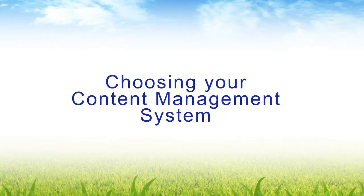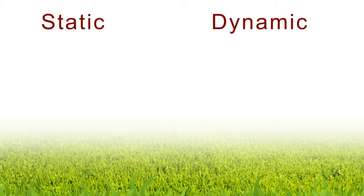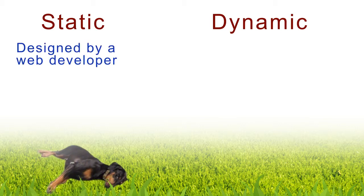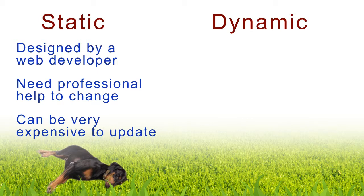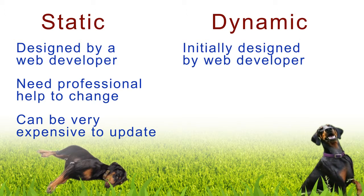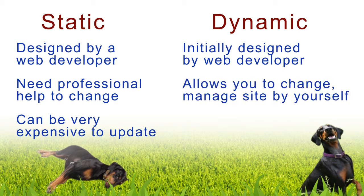Choosing your content management system. There are two types of sites: static and dynamic. Static sites are usually designed by a web developer quickly and provide basic facts about your organization, but you can't change them without a professional web person, and that can be expensive. A dynamic site is initially designed by the web developer, but it enables your organization to update the content, photos, and manage the system. It saves you time and money — it opened up doors for us to do updates on-site as we got new thoughts, new plans, and new programs.